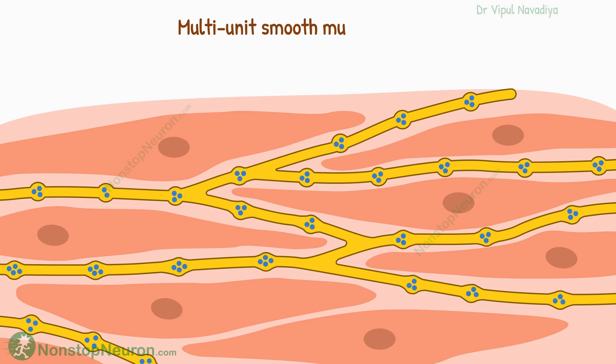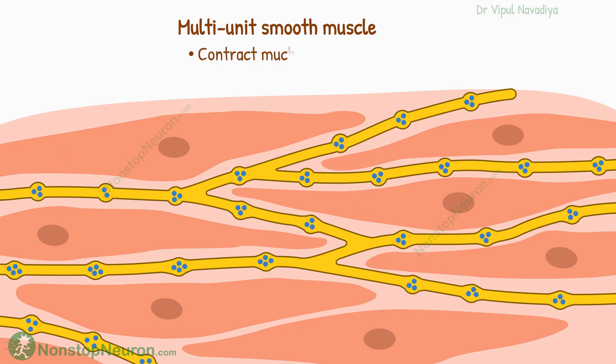In multi-unit smooth muscles, the varicosities lie closer to the muscle fibers, and each fiber is stimulated independently by these closely associated varicosities. Because of this, such fibers contract much faster than those stimulated by diffuse junctions. Such junctions are called contact junctions.